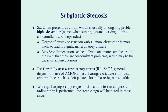Workup includes laryngoscopy, which is the most accurate test for diagnosis. If you obtain a radiograph — for example, when considering croup — you may often see the steeple sign due to inflammation and narrowing at the level of the cricoid cartilage, making it very difficult to distinguish from croup on imaging. However, subglottic stenosis is an ongoing problem that does not resolve, which distinguishes it from croup and spasmodic croup, which are more intermittent.